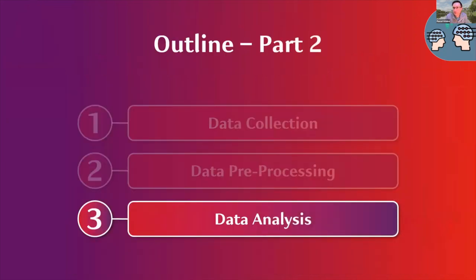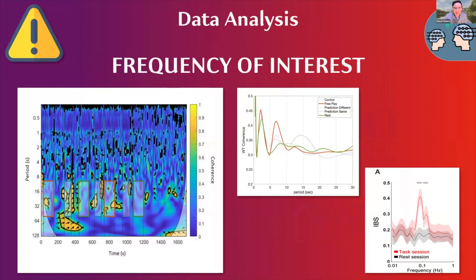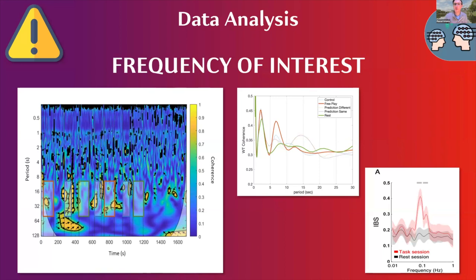Now a few considerations on data analysis. We already talked about the task frequency and frequency of interest — you should carefully choose the task frequency beforehand. You can take pilot data and do some decomposition of your frequencies to see where for your specific task you see the highest coherence values. These coherence values might differ quite strongly — for example, for resting state, free play, or more structured predictive tasks. But to reiterate: you should not check for different frequencies in your main analysis and then only report those where you find the highest coherence value, because that wouldn't be proper science.